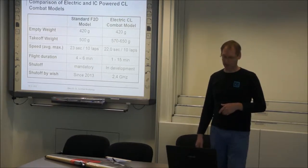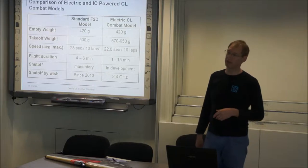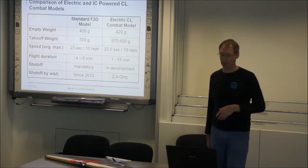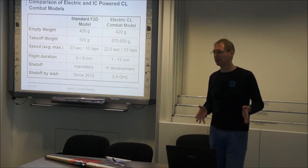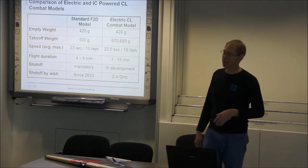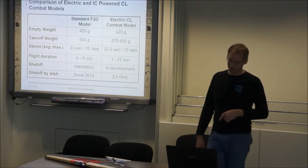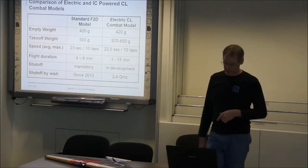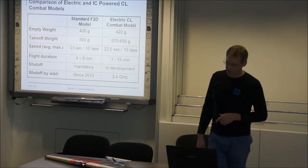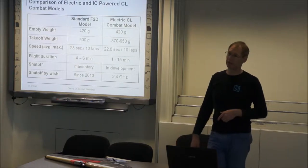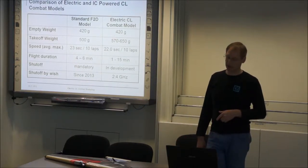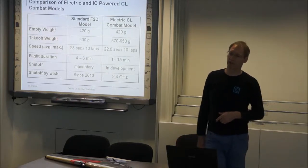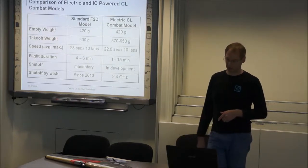The speed depends also in F2D on the motor prop and also on the weather. In electric it's dependent on how fast would be empty our battery. The flight duration as standard in F2D is 4 to 6 minutes. In electric it's dependent. If I fly very slow I can fly 15 minutes. But if I want to fly 22 seconds the battery is empty in one minute.